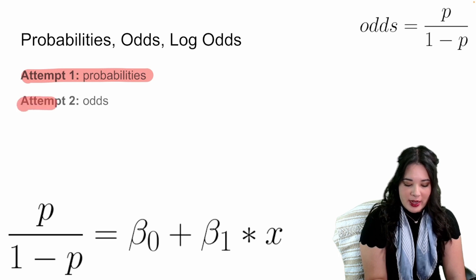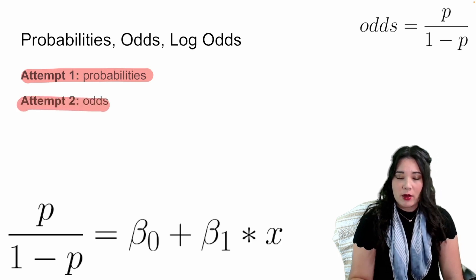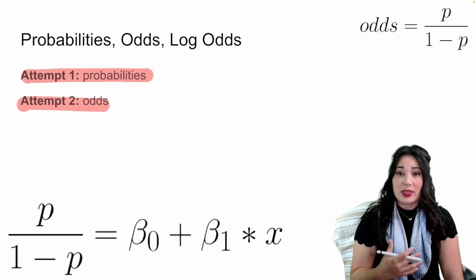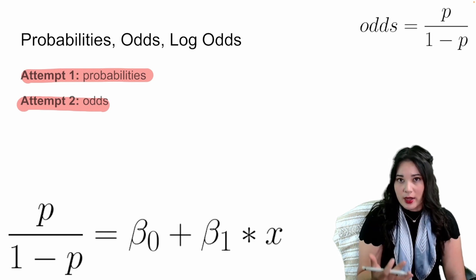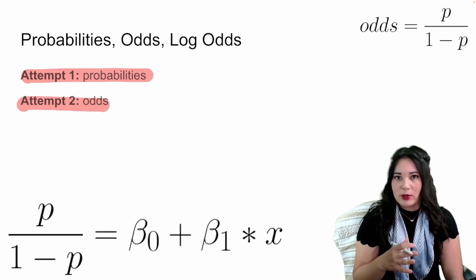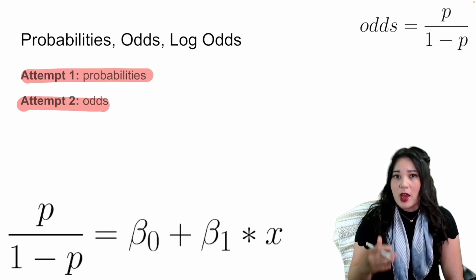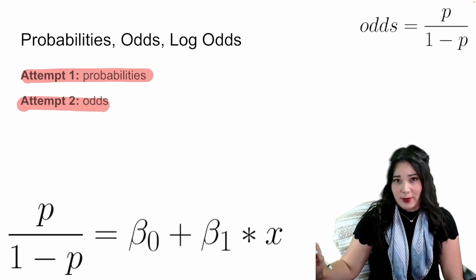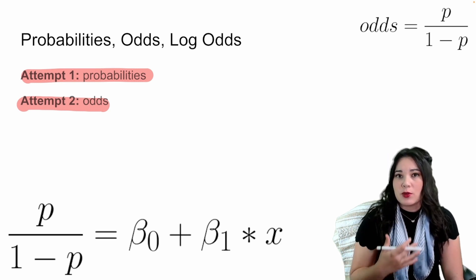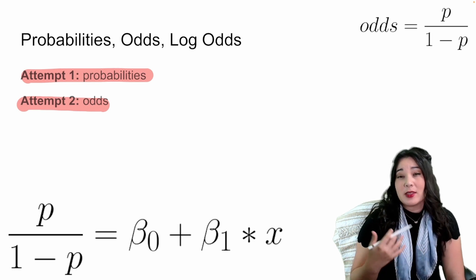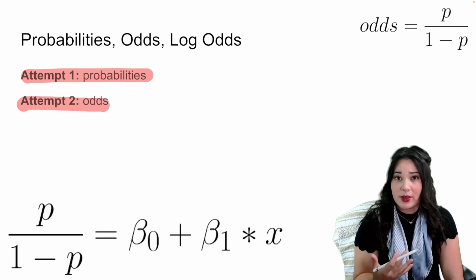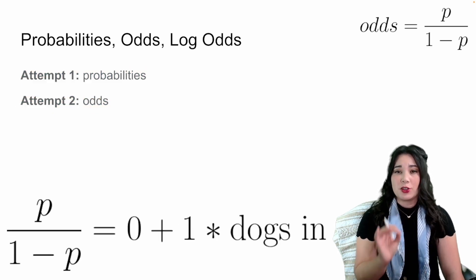So instead of probabilities, why don't we try odds? Instead of using probabilities as the outcome of our model, what if we used odds — using a linear regression model to predict the odds of an event happening? One benefit is that unlike probabilities, which are bounded between zero and one, odds are bounded between zero and positive infinity, making it a little less likely our model will produce impossible predictions. However, it is still possible for linear regression to produce a negative value.